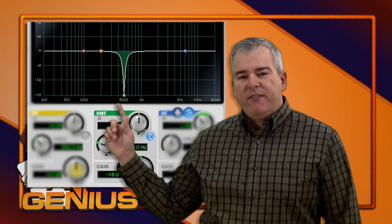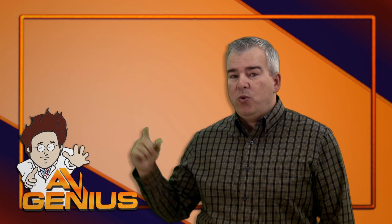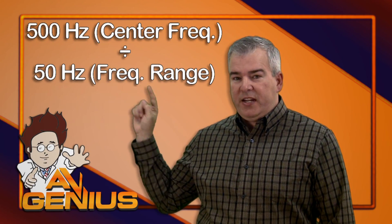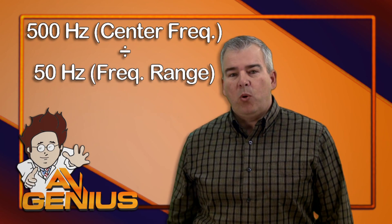So a center frequency of 500 Hz that only affects a bandwidth that's 50 Hz wide would be a Q of 500 divided by 50, or 10.0.